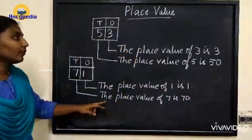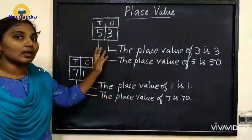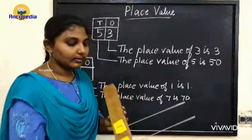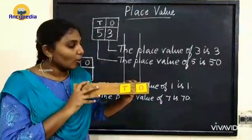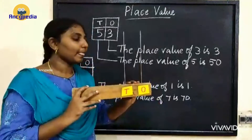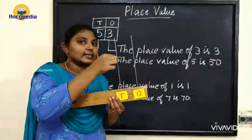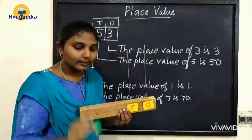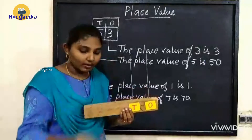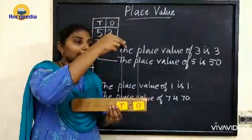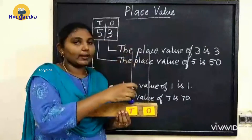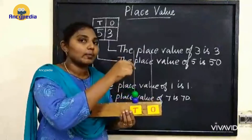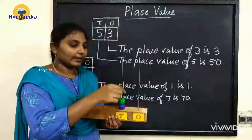Okay now we are going to represent these numbers on the abacus. See this is an abacus — an abacus for a two digit number. Here this is a spike, and this is a bead. We have to place the beads on the spike of the abacus.